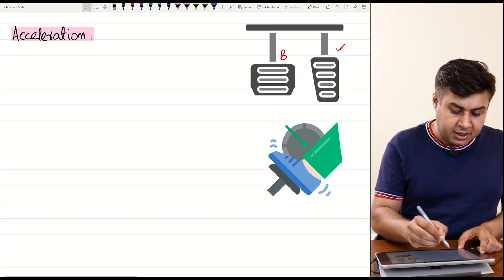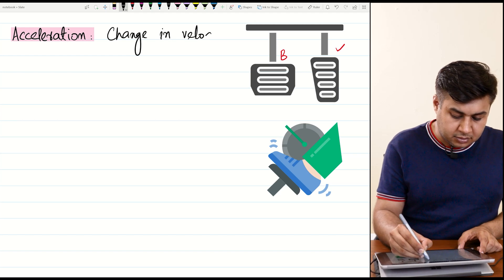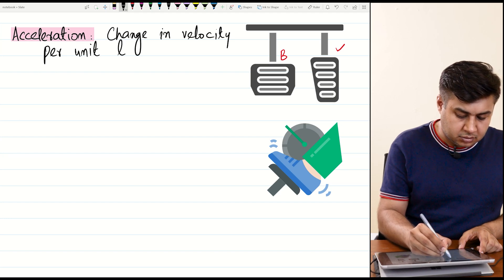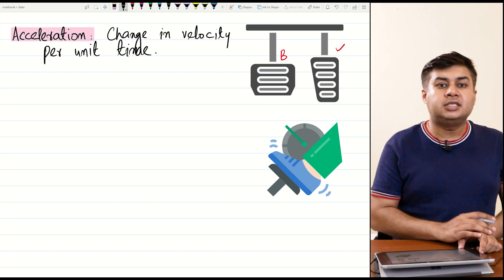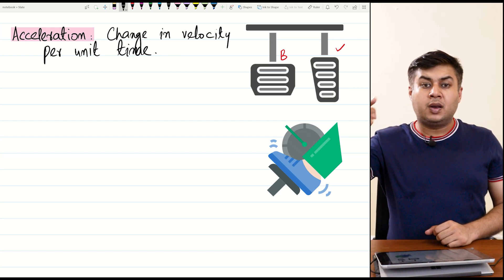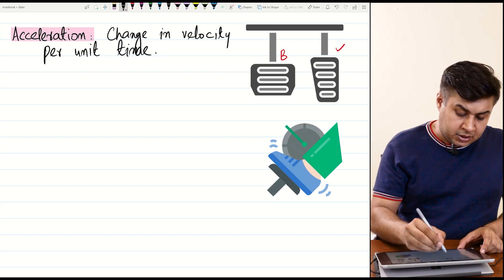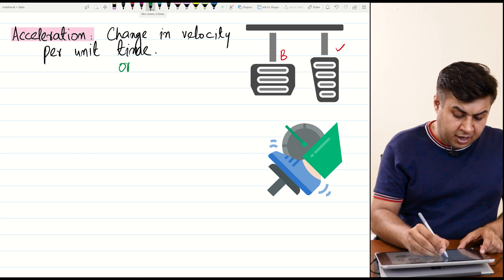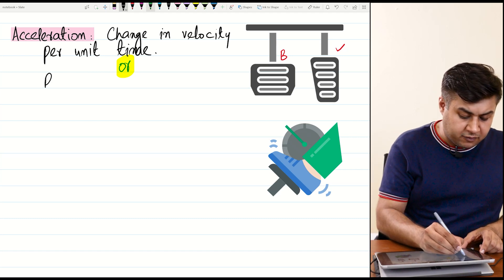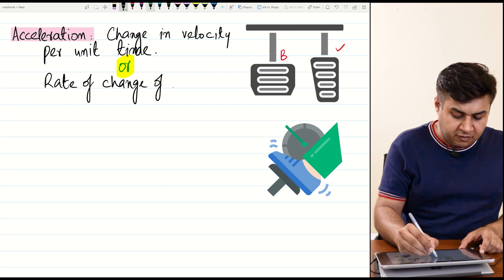Acceleration is change in velocity per unit time. This change could be in the form of an increase in velocity or a decrease in velocity. Another definition is: acceleration is the rate of change of velocity.